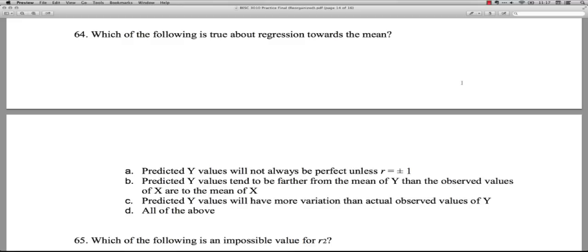Because what that is saying is that the prediction is more spread out than the predictor variable, and it's usually the opposite, that the predictions are less spread out. Option C says predicted Y values will have more variation than actual observed values of Y. That's almost never the case because the predicted values are on this straight line and observed values are spread out all over the place. So I'm going to go with A on this one.